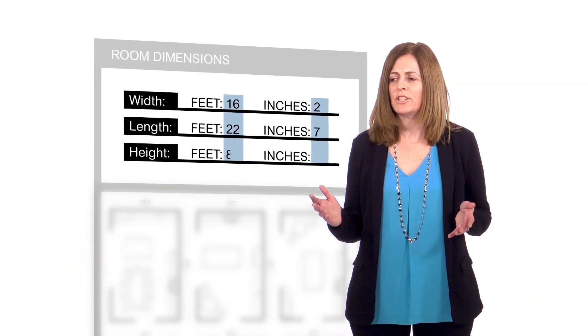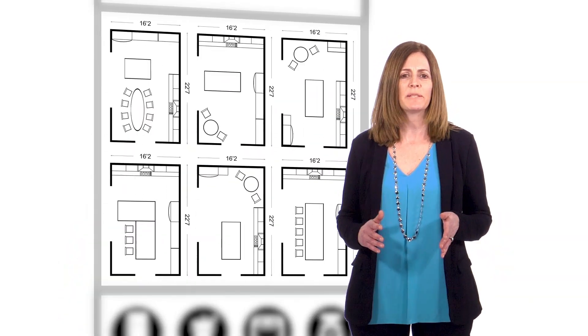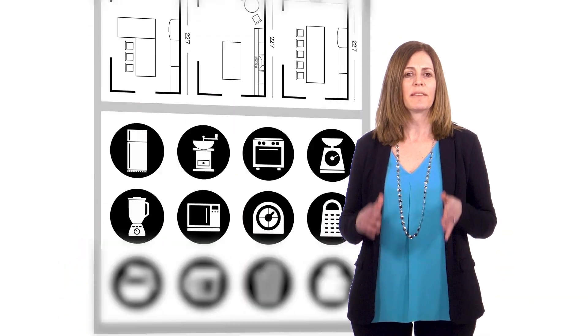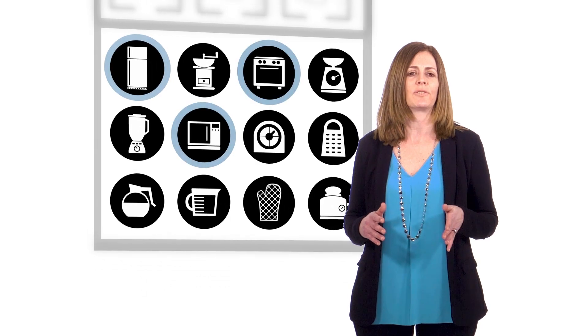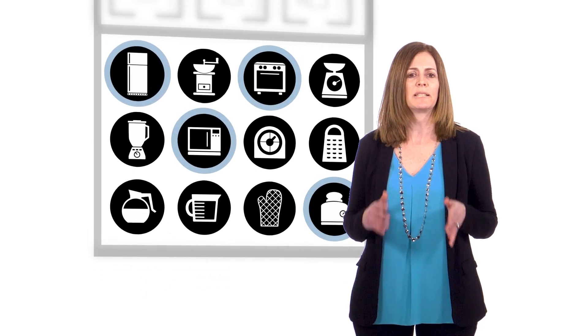I enter my room dimensions, choose from standard layouts, then add in my accessories to customize my space. I can see 3D views of my room, complete with cabinets, countertops, appliances, floor, and lighting, so I'll know exactly what the finished project will look like and how much it'll cost.